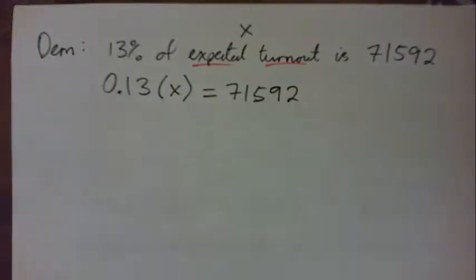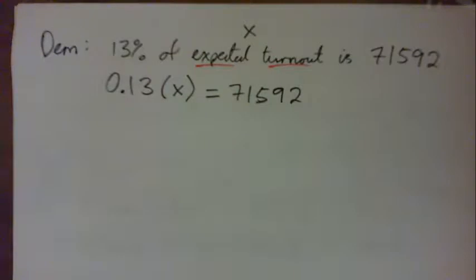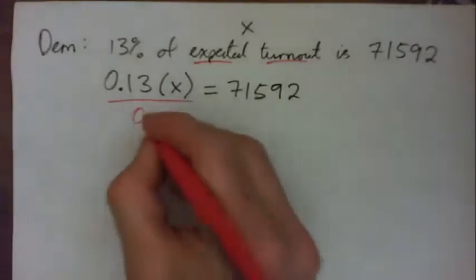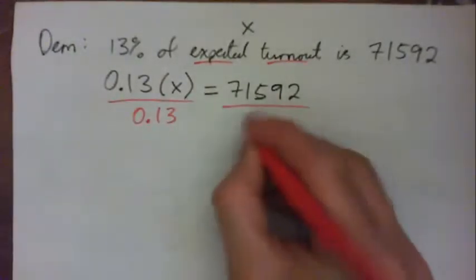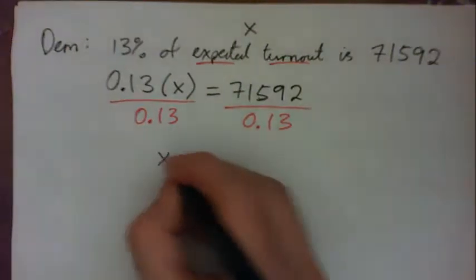So what do we do to get X on its own here? Divide, lovely. Divide both sides by 0.13, and then X equals...